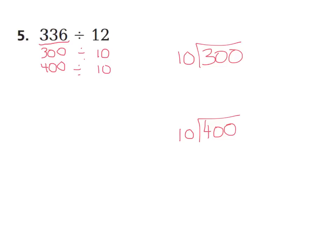Let's go ahead. We all should know that 300 divided by 10, 10 times what is 300? 30. Because 30 divided by 10 is 3, and then just bring up your zero. And 400 divided by 10, we could say it's about 40. So a reasonable estimate for 336 divided by 12 could be about 30.